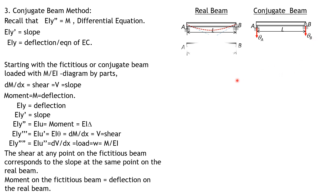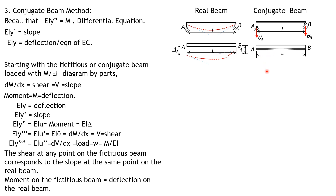For a beam free at A and free at B, when loaded, points A and B will both translate and rotate — there is delta A, theta A, delta B, and slopes at A and B. Therefore the conjugate beam should replace A and B with fixed supports, because fixed supports have both shear and moment. Having shear means having theta, and having moment means having deflection, so there are deflections at both A and B — that is the corresponding conjugate beam.